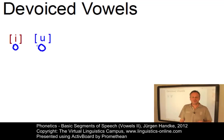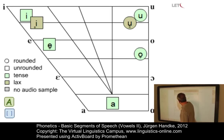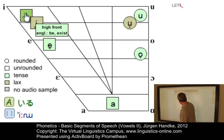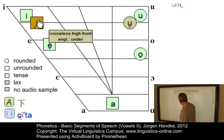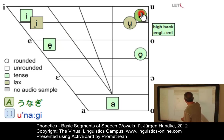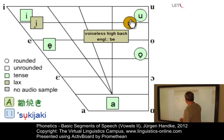Let's listen to examples from Japanese where you can clearly hear the contrast between voiceless and voiced vowels. Here we have a speaker from the main island of Japan. First, a voiced vowel: 'iru'. And now a voiceless variant: 'shita'. You can hear that the vowel after 'shi' is voiceless. Similarly: 'unagi' versus 'sukiyaki', where again a voiceless vowel is clearly audible.